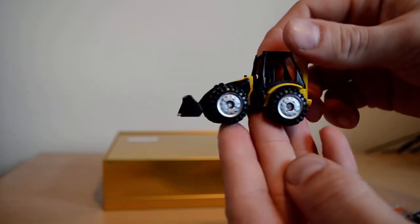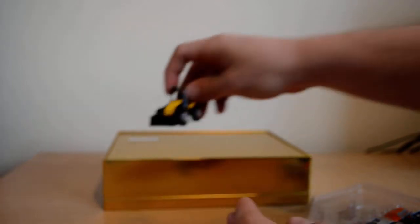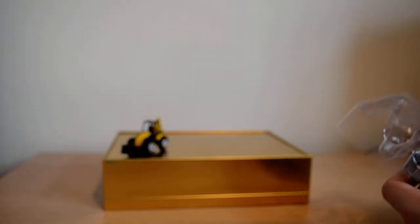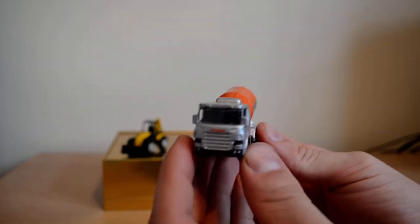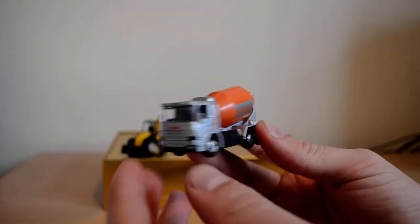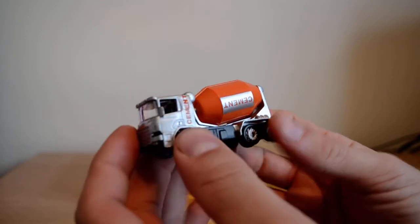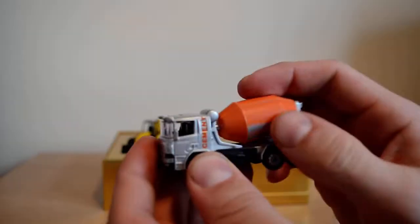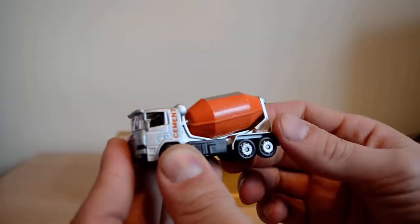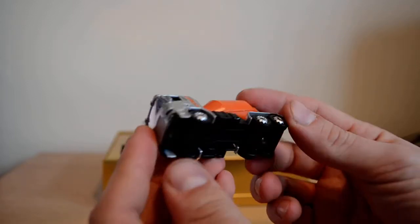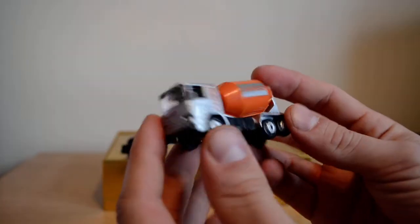Second out is the cement mixer, which is a Scania lorry. Metal body again, plastic cement mixer on the back, six wheels, Corgi mark underneath.